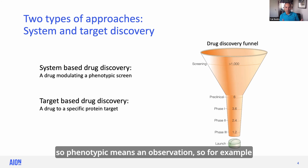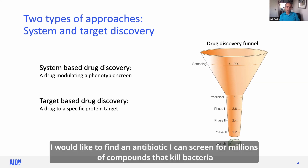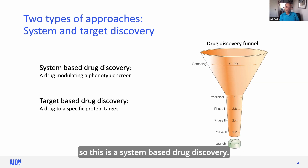So phenotypic means an observation. For example, I would like to find an antibiotic — I can screen millions of compounds that kill bacteria. So this is system-based drug discovery.